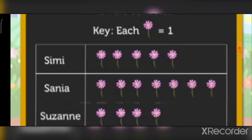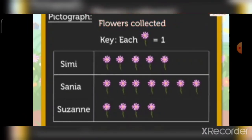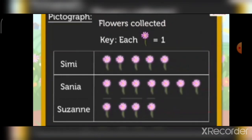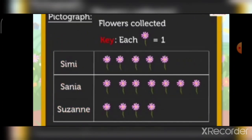We should be able to collect information from a pictograph by reading it. Every pictograph has: a title, which tells us what the pictograph is about; pictures, which tell us the given number of objects; labels, which tell us what kind of data is shown; and a key, which tells us the number each picture is equal to.